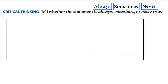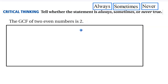Now I want to show you some always, sometimes, never questions. These questions are so good because they make you really think — do you understand the idea of what a greatest common factor is? Here's the first one: the greatest common factor of two even numbers is two. What I do is try to debunk it. I try to get something that never works or always works. If I find one that's true and one that's false, then I know it's sometimes.